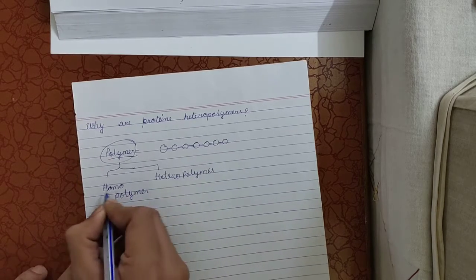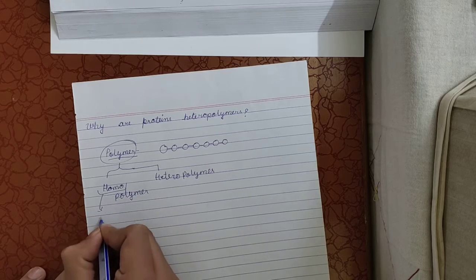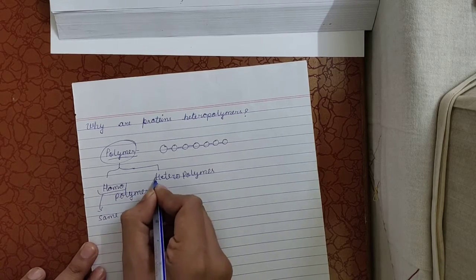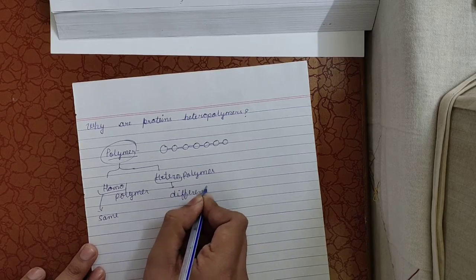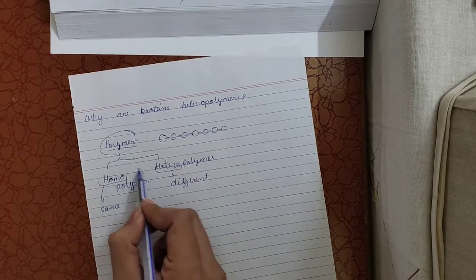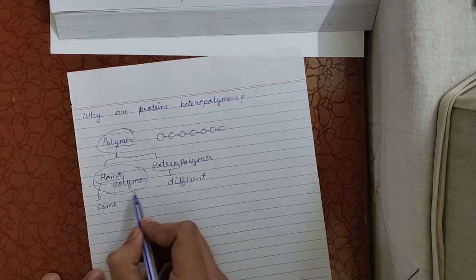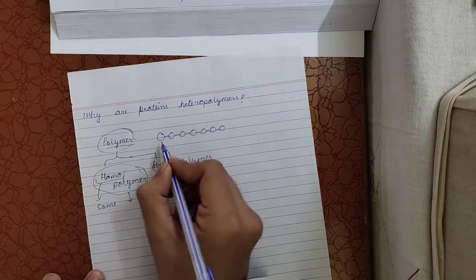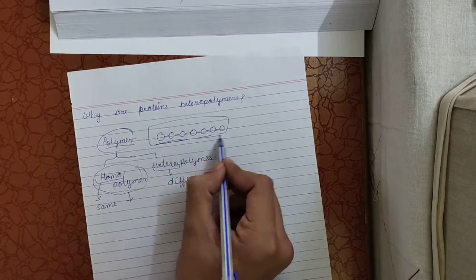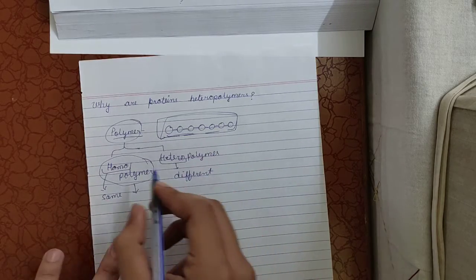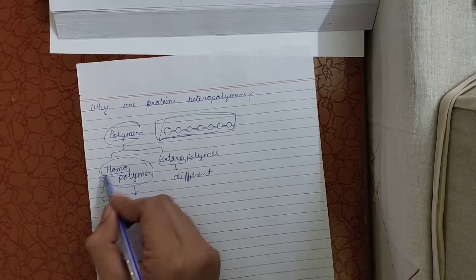As the name suggests, homo means same and hetero means different. Homopolymer will be a type of polymer in which all the repeating units are the same. If all the repeating units in a structure are the same, that's why we call it homopolymer.